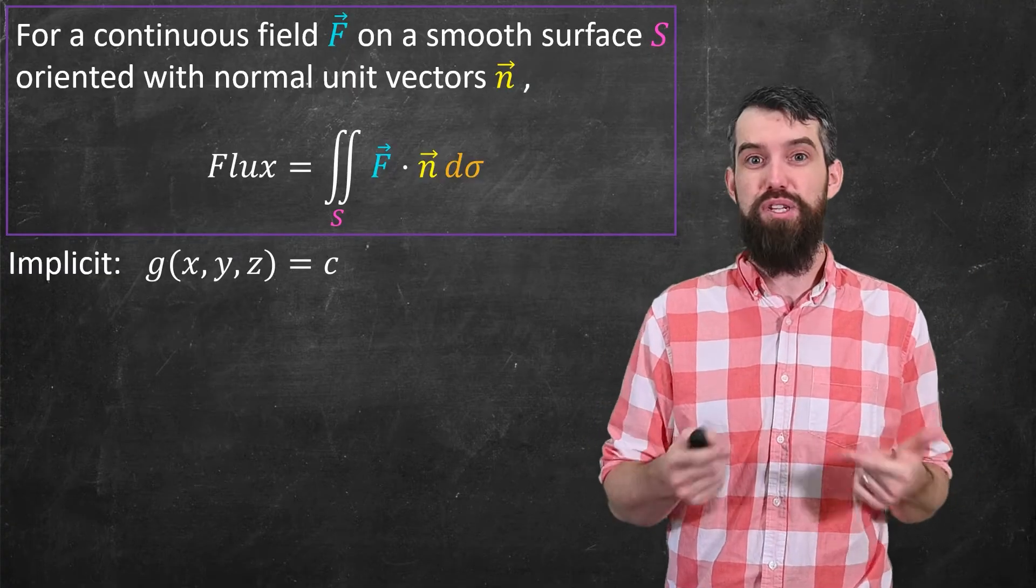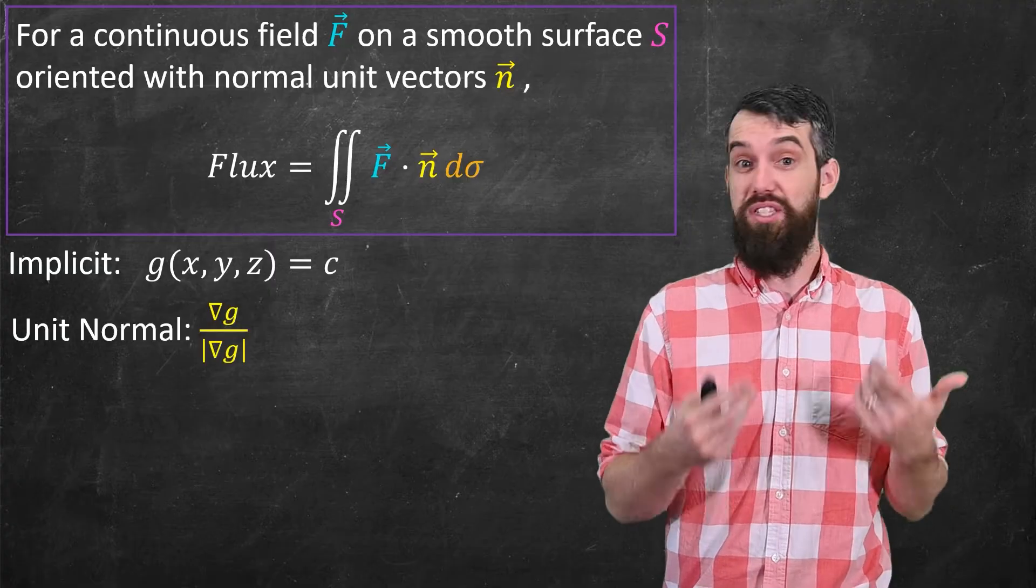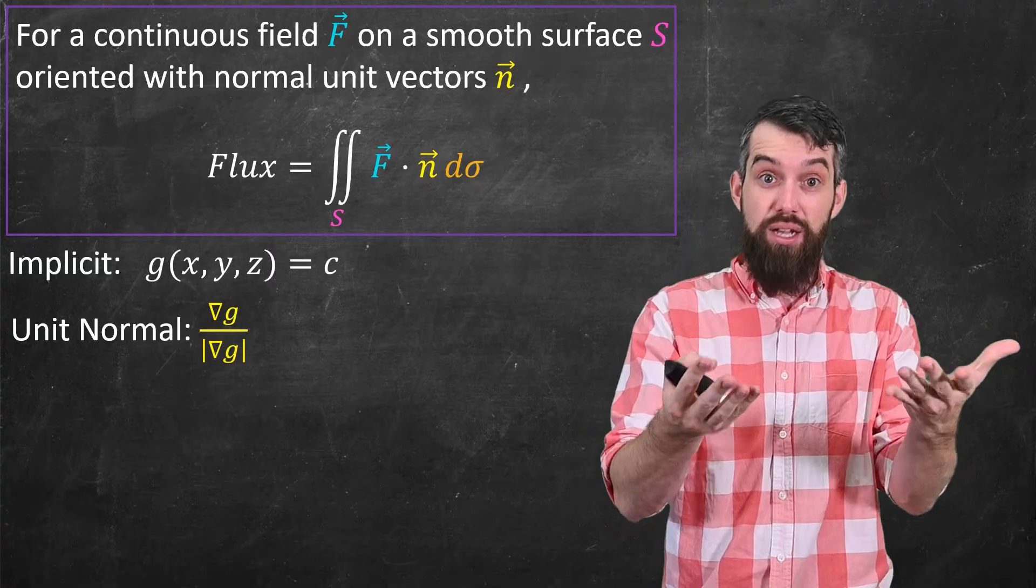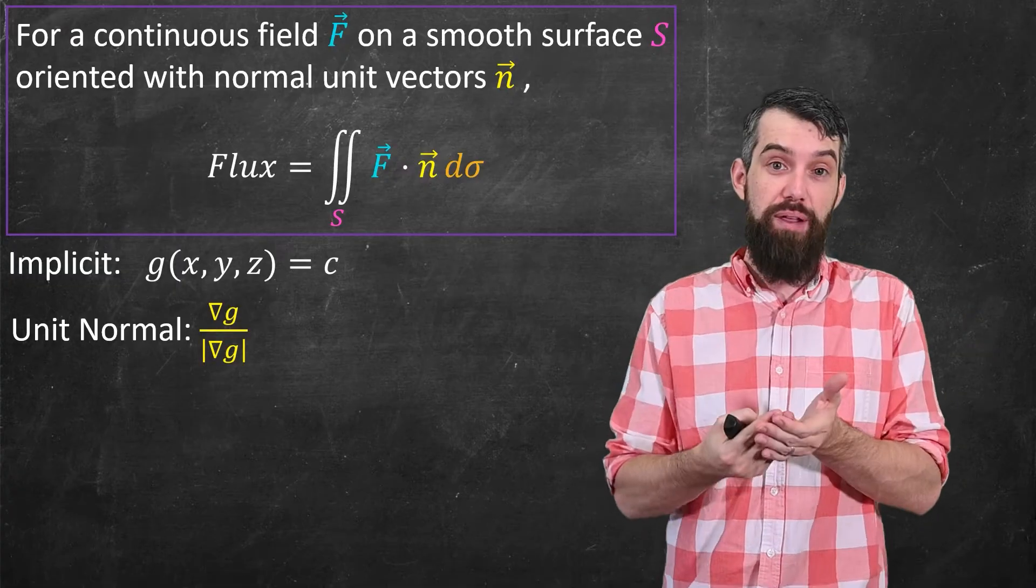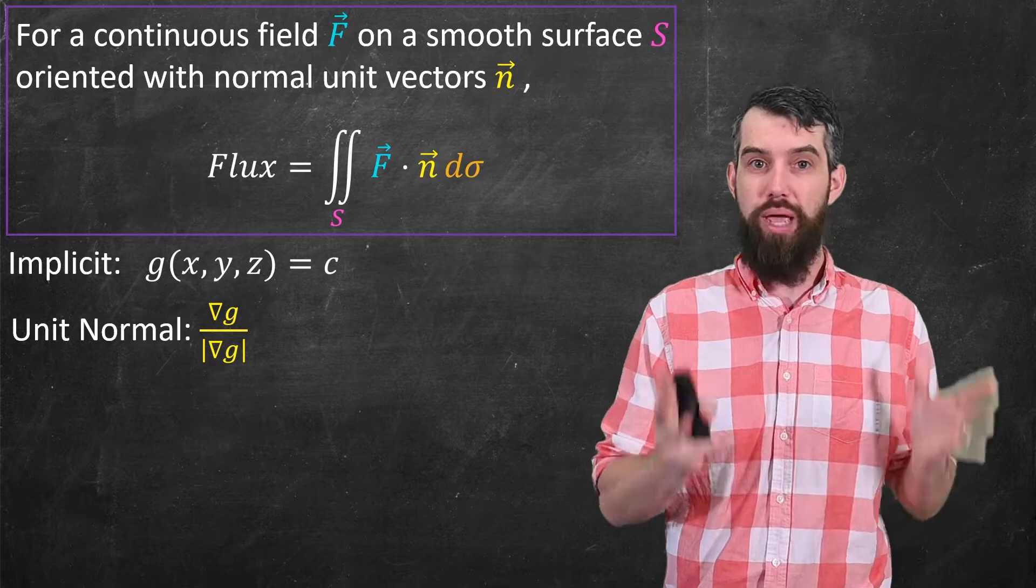Regardless, I have an implicit description of my surface, and then I want to find what's the unit normal. We've talked about that before. It's the gradient of g divided by the length of g. Again, I'm going to choose the positive instead of the negative here. Doesn't matter. You could do the exact same thing with the negative. It would be okay too.